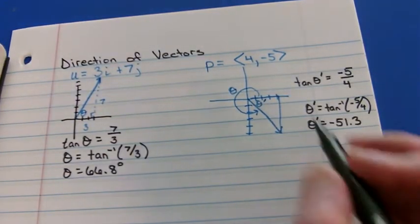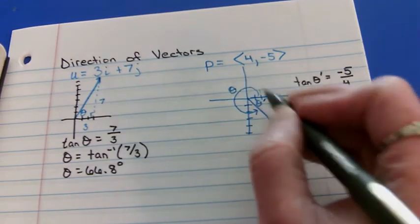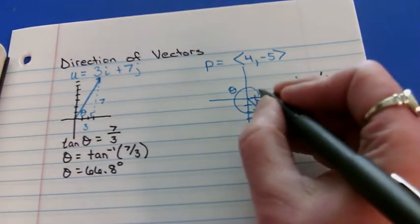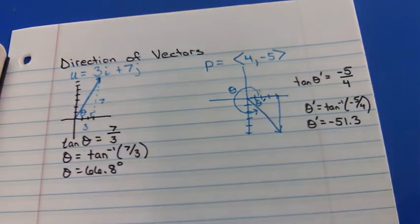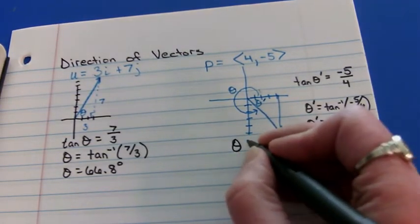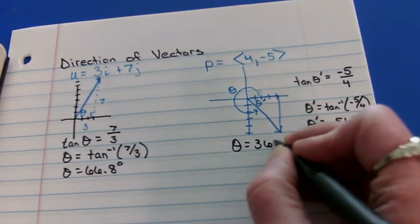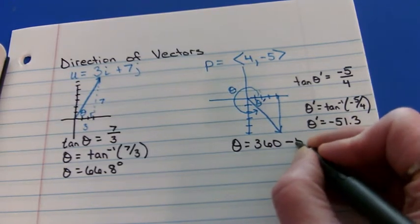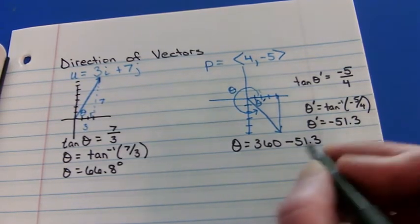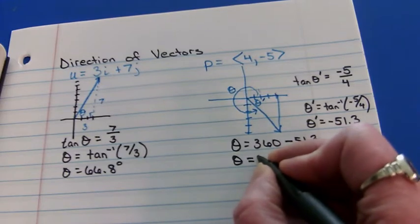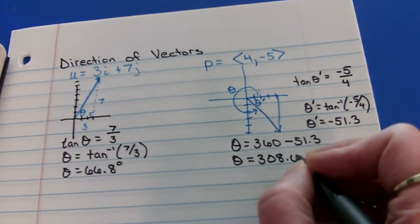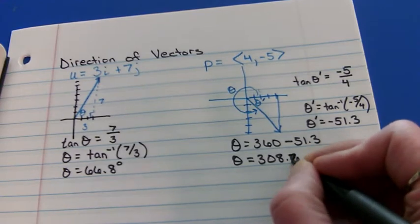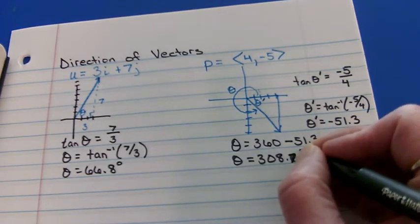Because it's going backwards, 51.3. But if I wanted the big angle, the real angle, well, it's almost to 360. It's short of it by 51.3. So, my real angle, I would take 360 minus that 51.3. And get 308.7 degrees.